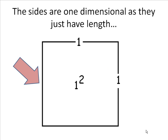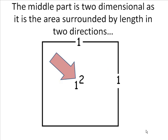The sides are just one-dimensional, as they just have length. The middle part is two-dimensional, as it is the area surrounded by length in two directions. It is the x and the y. It is the area.